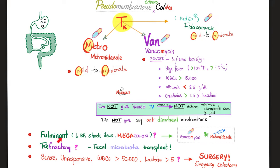If the patient is so sick — blood pressure is low, the patient is in shock, with signs and symptoms of ileus and megacolon — do not give just one antibiotic. You should combine oral vancomycin with intravenous metronidazole. So to recap: oral metronidazole is for mild to moderate cases; IV metronidazole plus oral vancomycin is for severe cases.